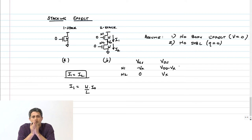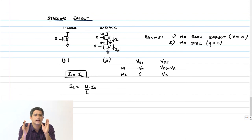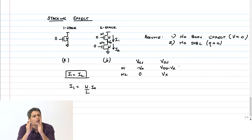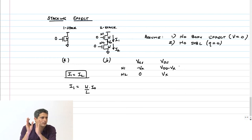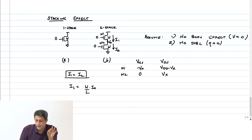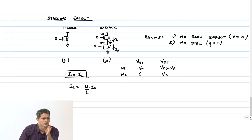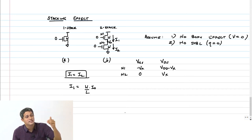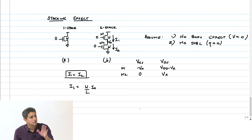If V_X is even 100 millivolts, V_GS for N1 is minus 100 millivolt — it is actually lesser. Because of this lower V_GS, N1 permits much lesser leakage current, while N2 can permit higher leakage current because V_GS is 0. So will V_X be close to ground or close to VDD?